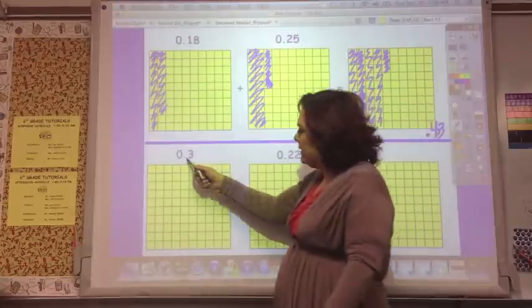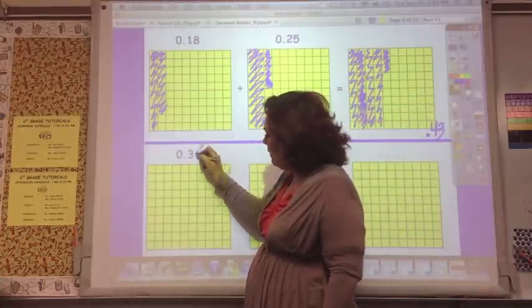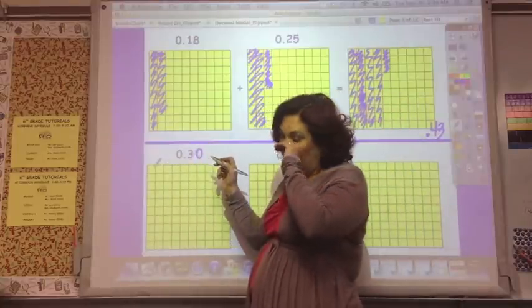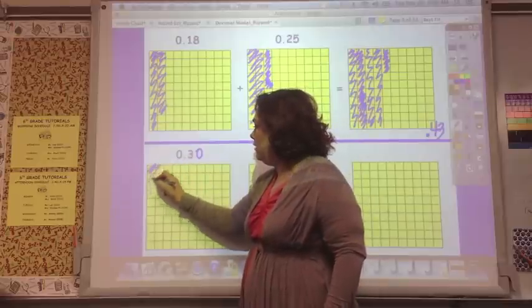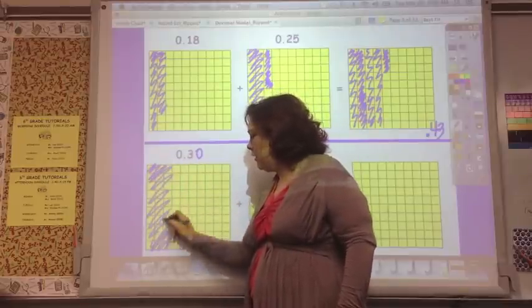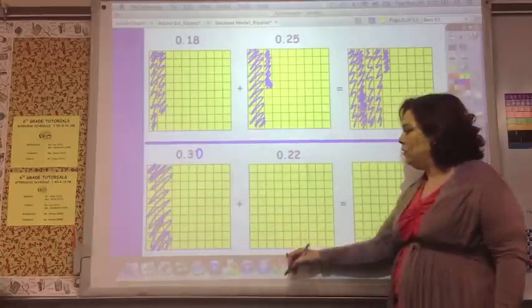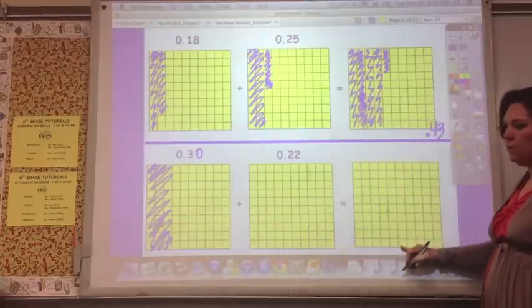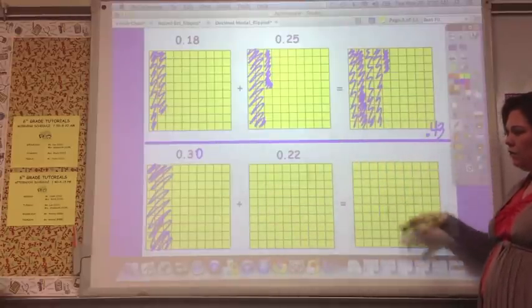Now watch out, three tenths is the same as three long bars or thirty hundredths. So you need to shade all of those. Shade thirty of them, and then shade twenty-two and show your answer here. So pause and then shade this one.